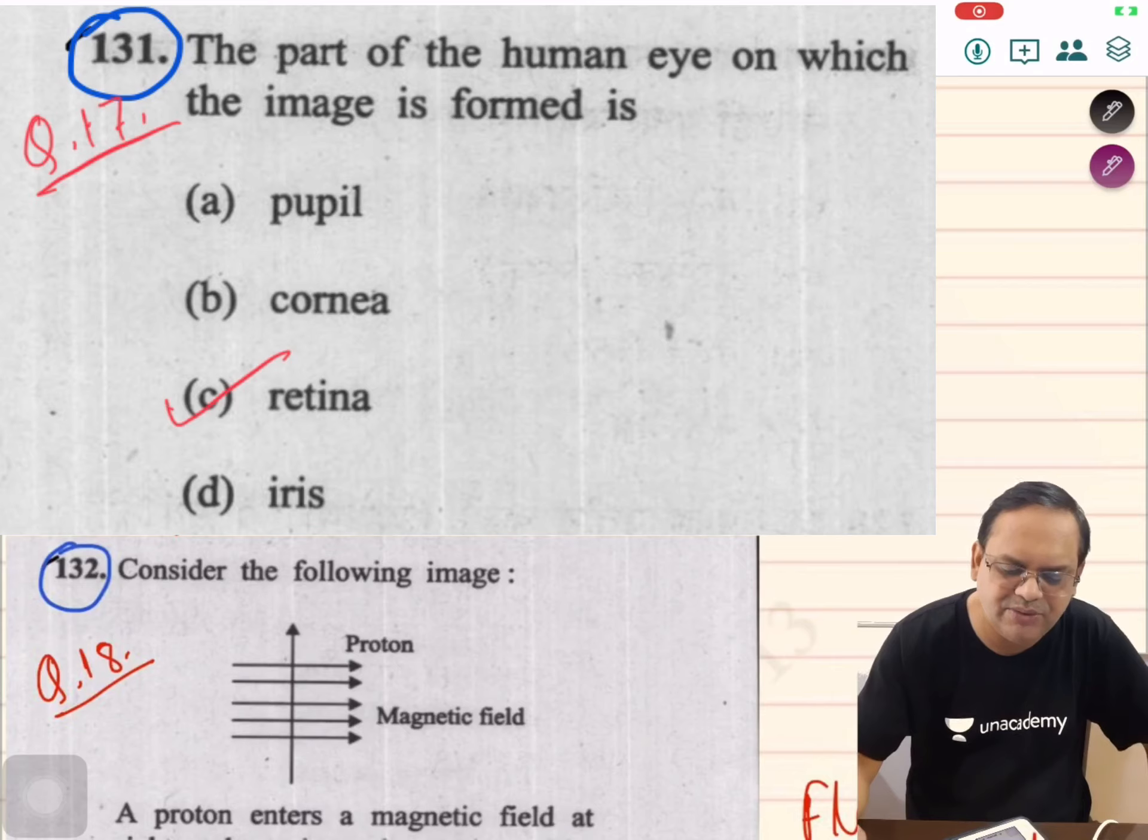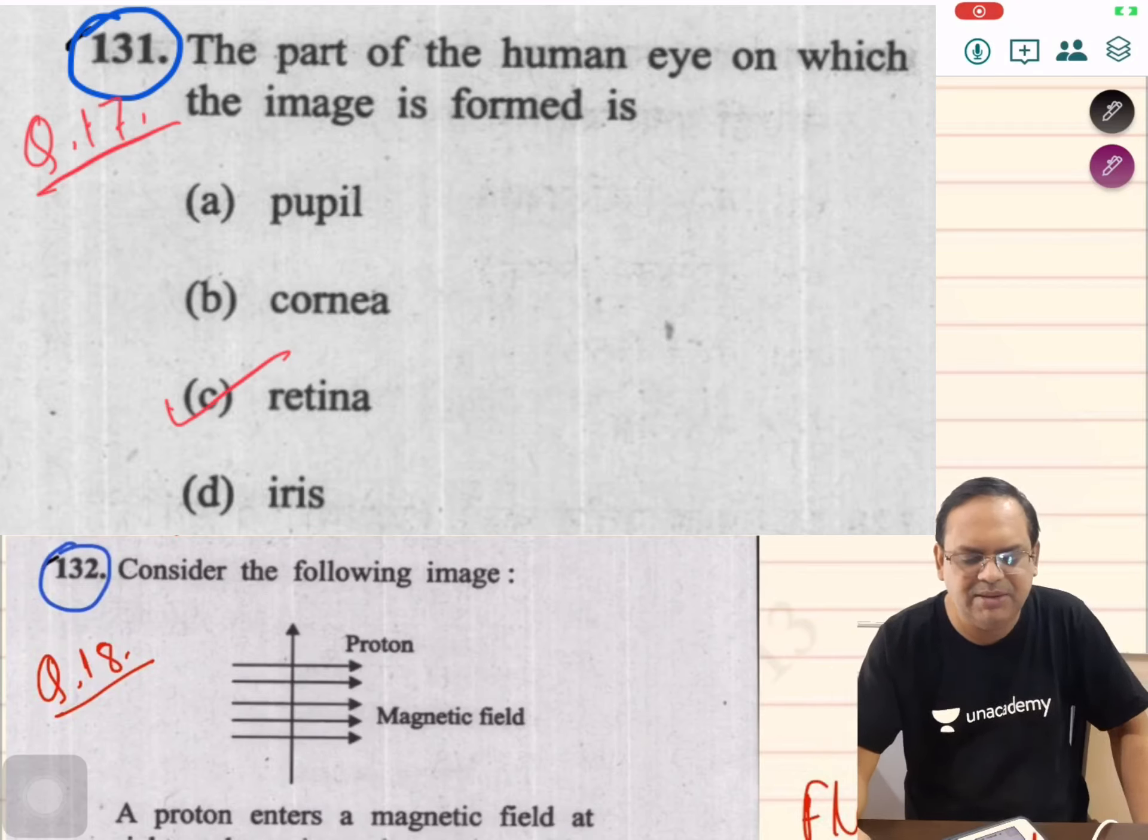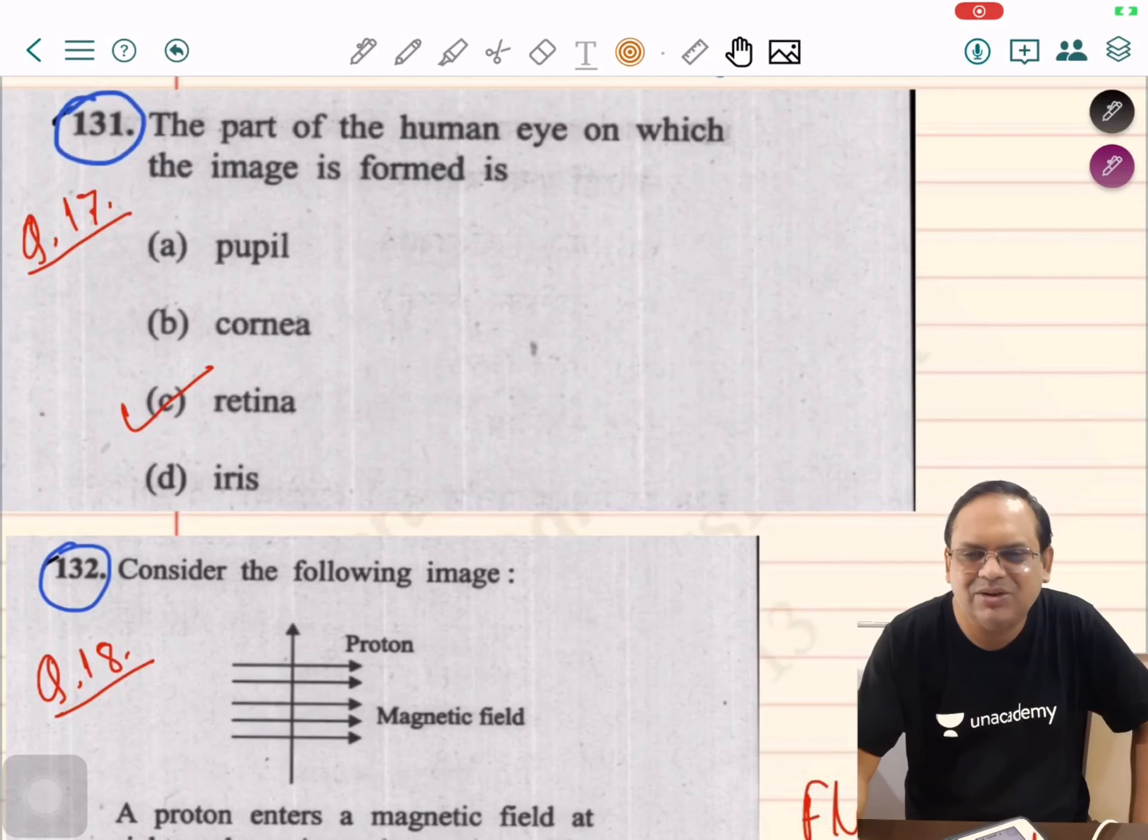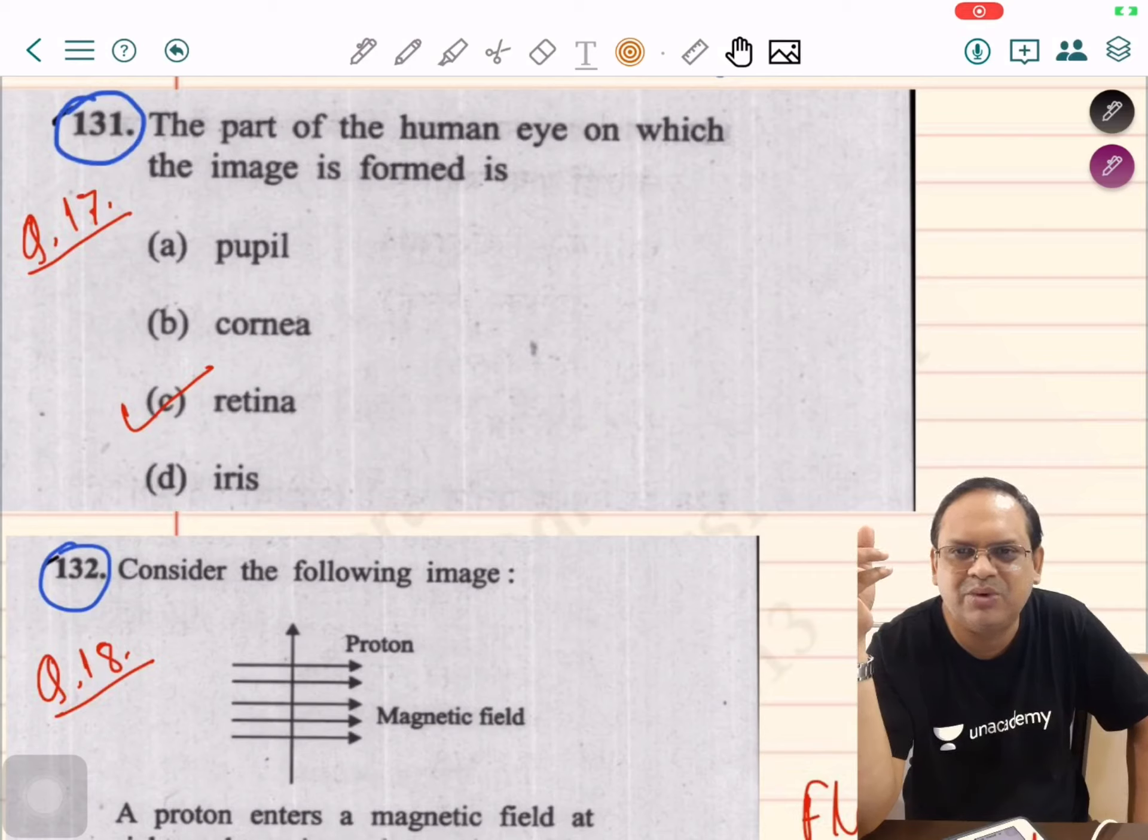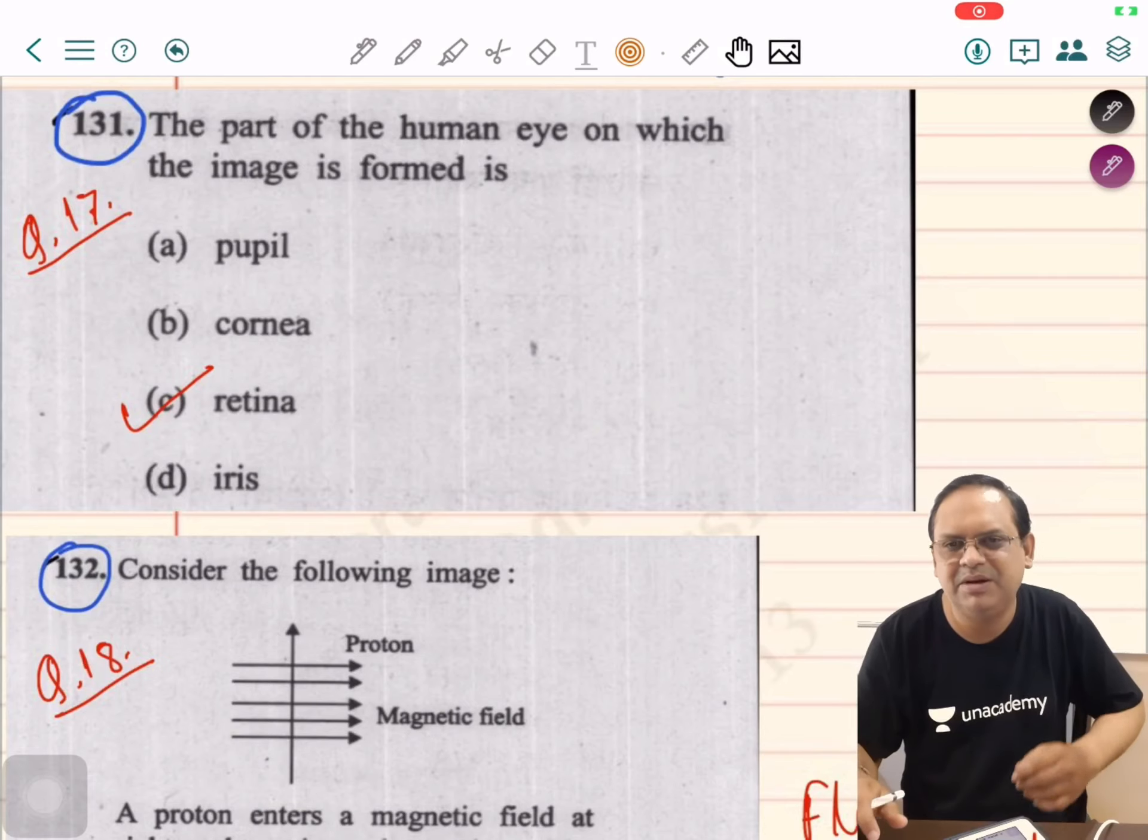Question number 17, the part of the human eye on which the image is formed is the retina. It's a fact that first an inverted image forms, then it is corrected by the mind through nervousness.